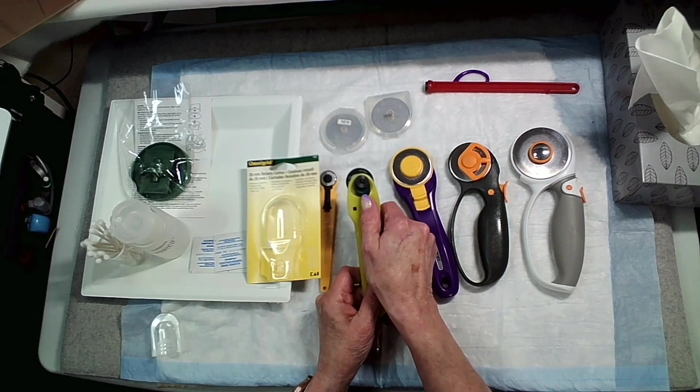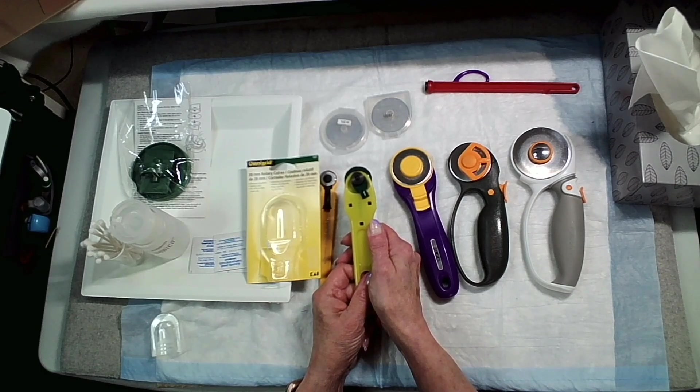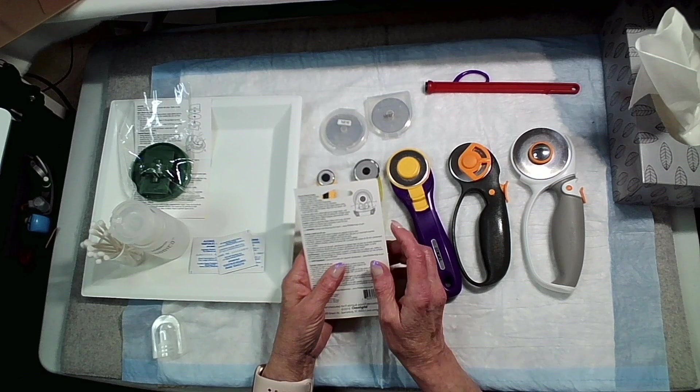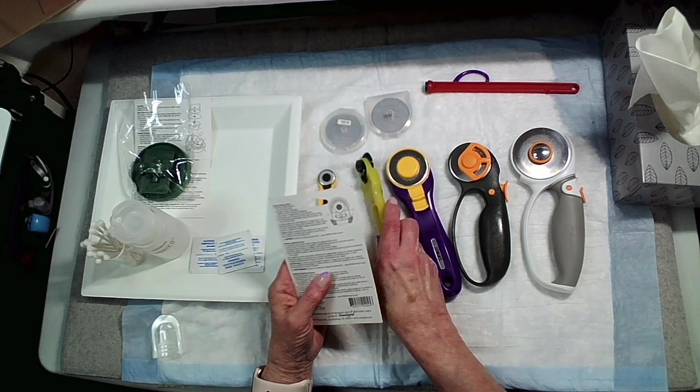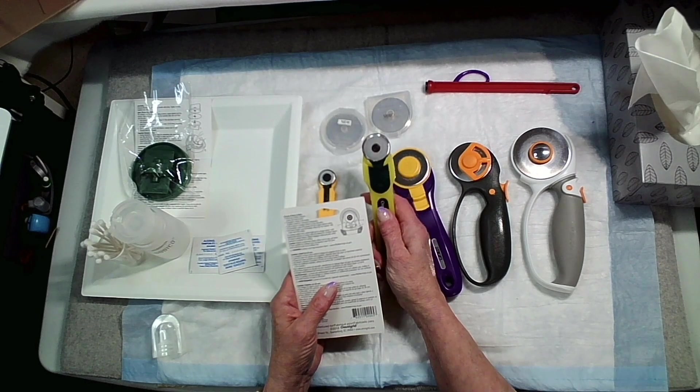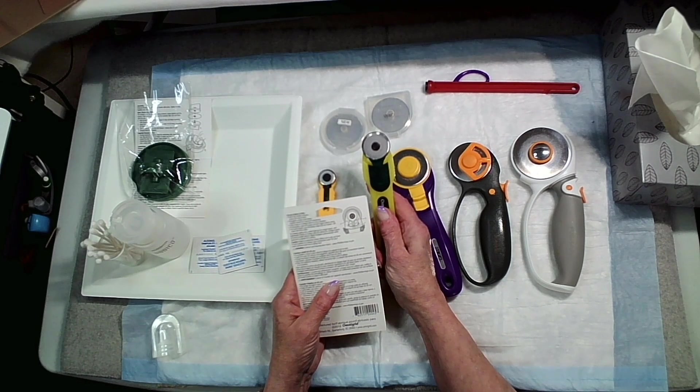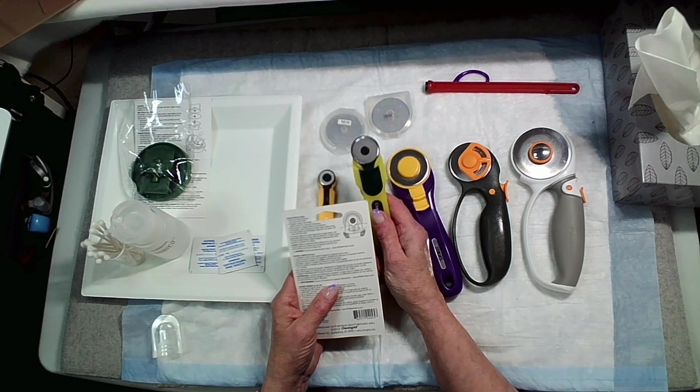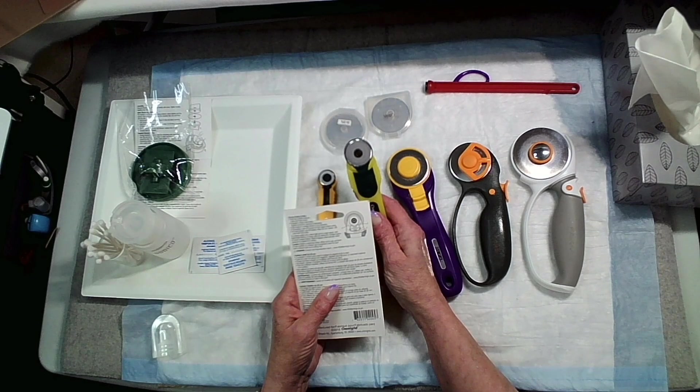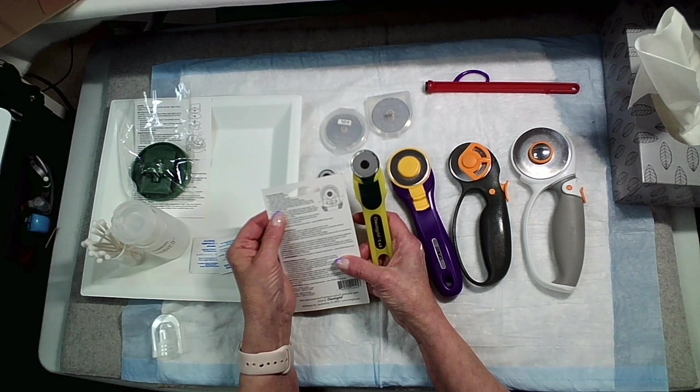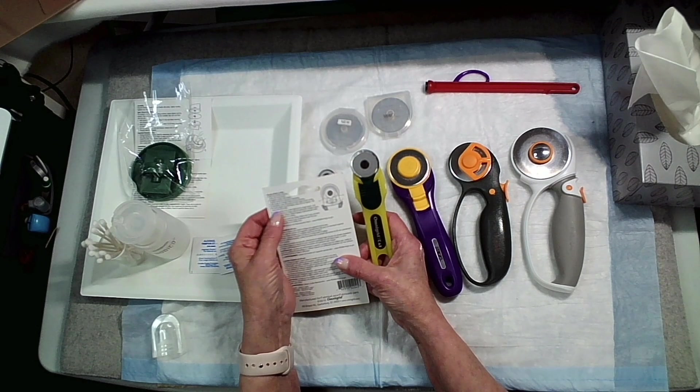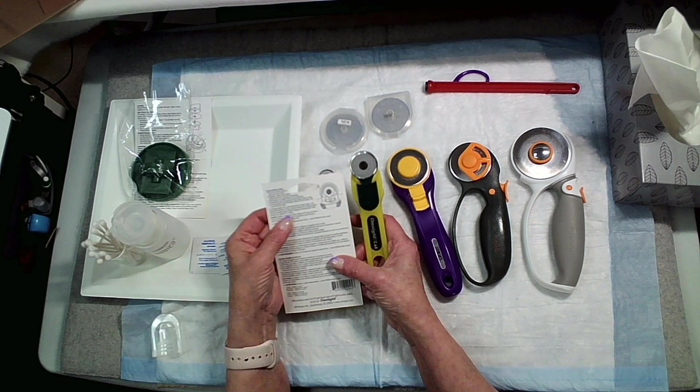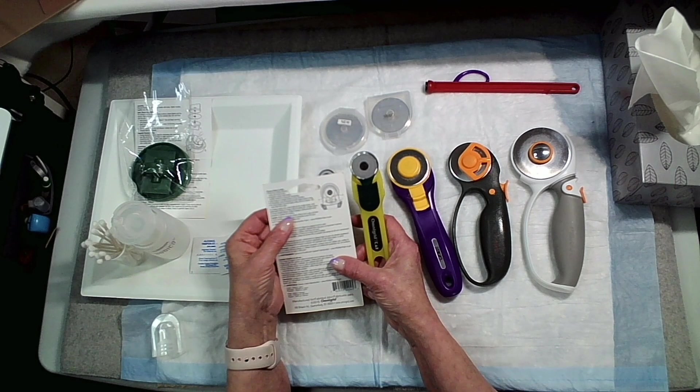When you move it to the right that says hard, that is for cutting through multiple layers of fabric. On the back it says it has a soft grip handle that reduces wrist and hand strain. The blade that came in it is a tungsten carbon steel blade and it is a chi blade.